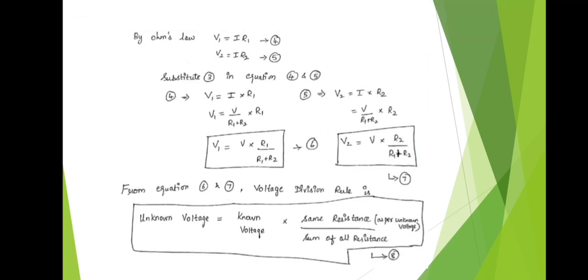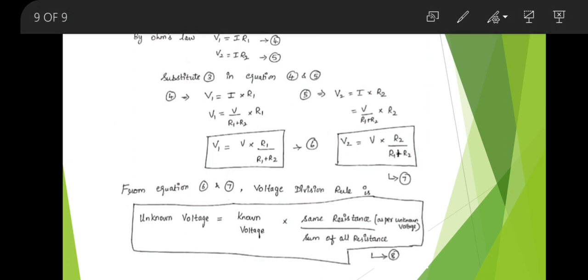By Ohm's law: V1 = I × R1 (Equation 4) and V2 = I × R2 (Equation 5); current will be the same. Now substitute Equation 3 into Equations 4 and 5. In Equation 4, replacing I with V/(R1+R2): V1 = V × R1 / (R1 + R2). Similarly, substituting into Equation 5: V2 = I × R2 becomes V2 = V × R2 / (R1 + R2). Mark these as Equations 6 and 7.